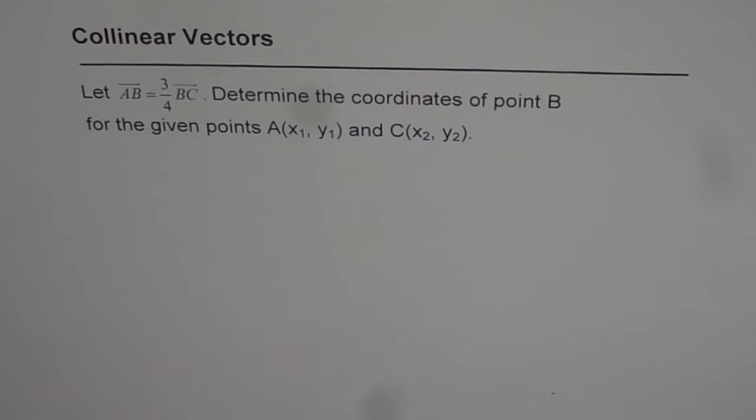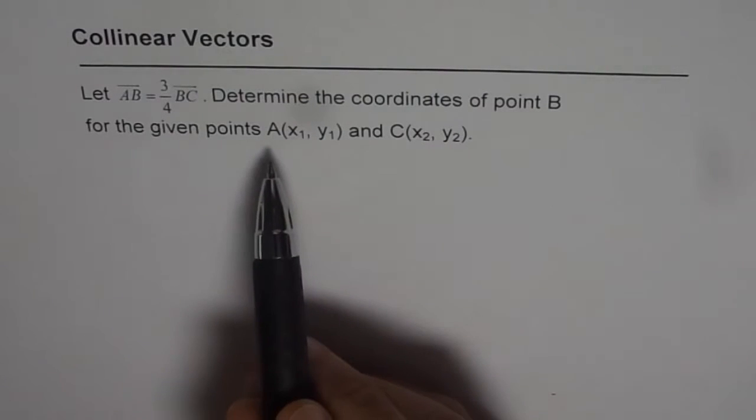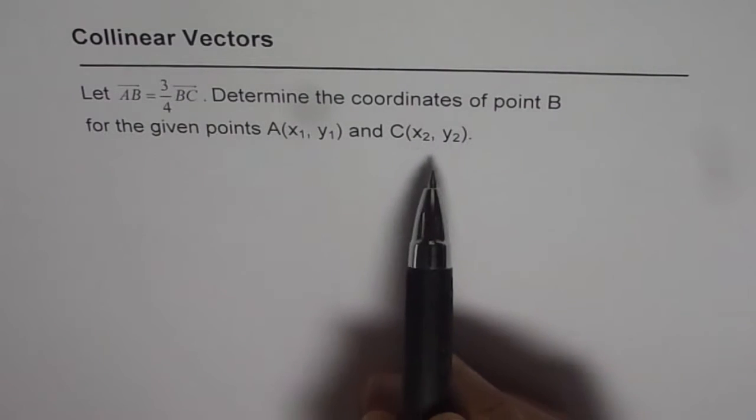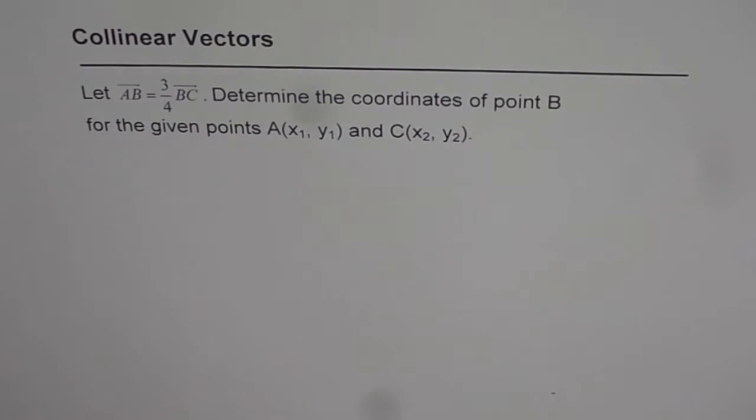Collinear vectors. Let AB equal three-fourths of BC. Determine the coordinates of point B for the given points A(x₁, y₁) and C(x₂, y₂).